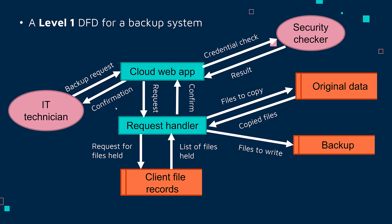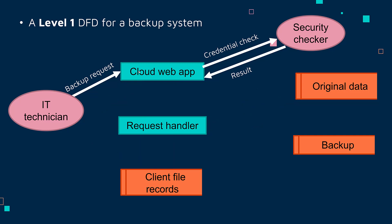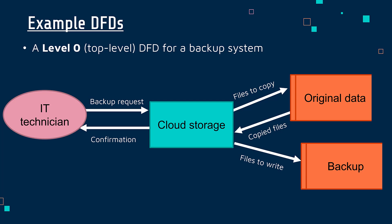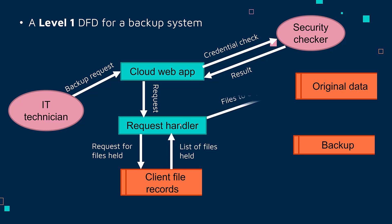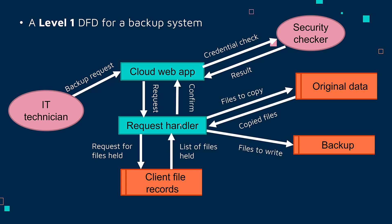In terms of what you need to know: you need to know roughly what the symbols mean and be able to interpret something like this. You'd hopefully get a description beforehand and might have to interpret aspects of it — for example, what does a symbol mean, or where does data move between the security checker and the cloud web app. Going back to the level zero diagram, I had only one process box, whereas in level one I had two process boxes. As you increase through the levels, you add more and more process boxes. In practice, you only really ever have level zero or level one DFDs.